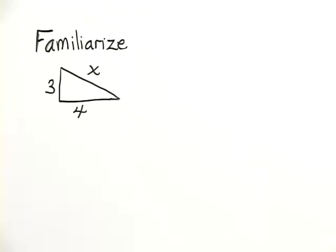You can see that this forms a right triangle with one leg 3 feet, one leg 4 feet, and a hypotenuse of x feet.